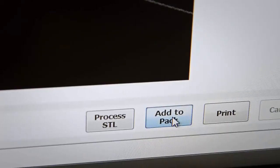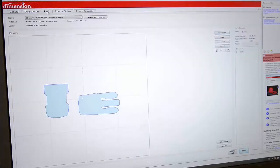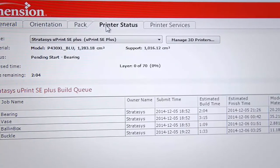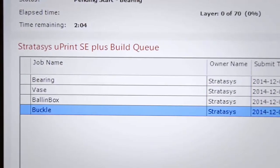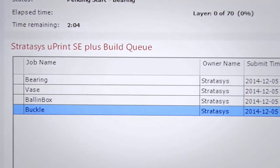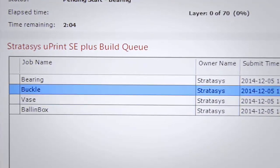We can now start the print directly or add to pack, which is the feature allowing multiple print jobs to be combined within the limits of the build chamber. The status tab shows the print jobs and the queue, and with the right admin rights, you are able to manage the priority of the print jobs.